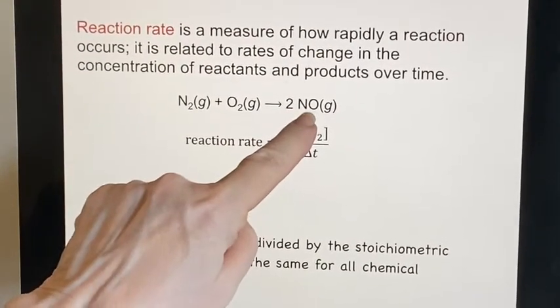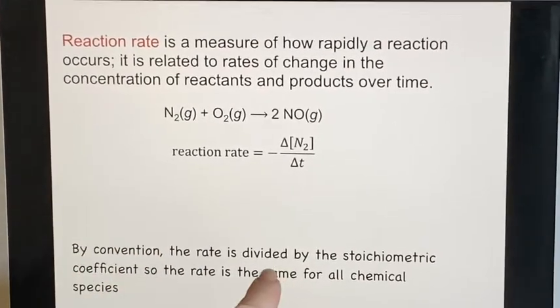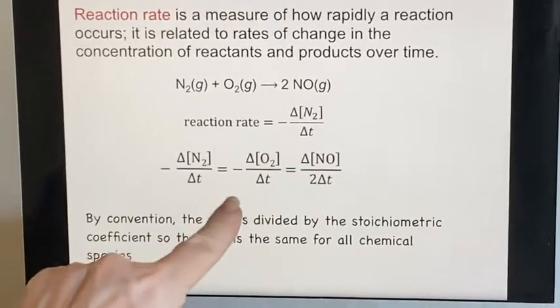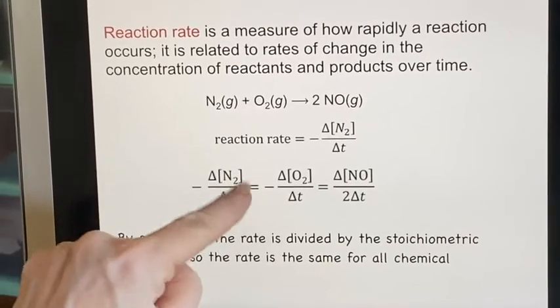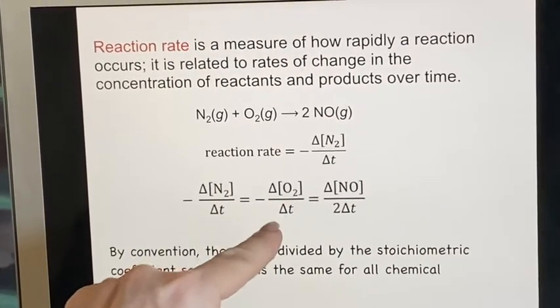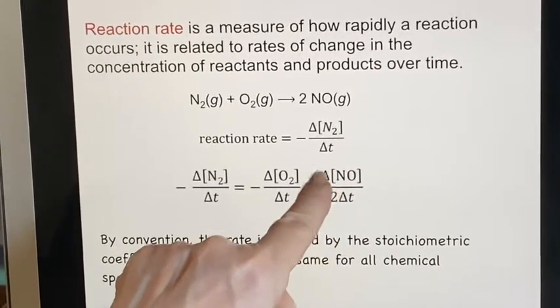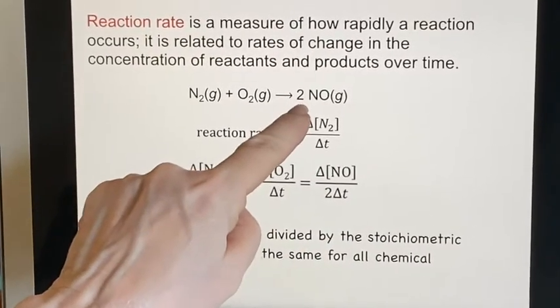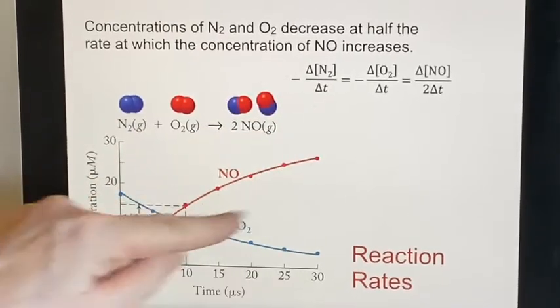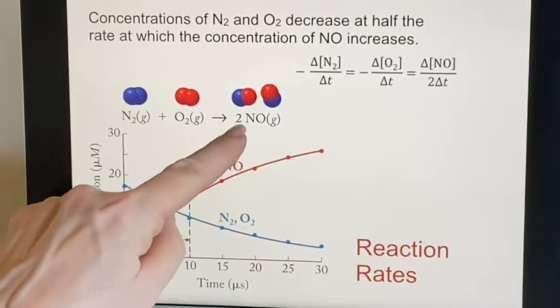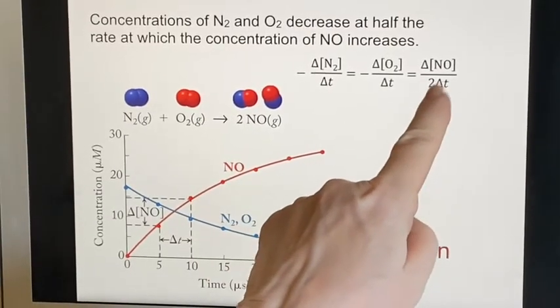So this rate has to be divided by the stoichiometric coefficient so the rate's the same for all the chemical species. If I was trying to do it in terms of this, this would always be twice as much. Then I would have to divide this by two. That's why it says divide by the stoichiometric coefficient. So we see that these three are all exactly the same number. This would normally be a negative number, but if I put a negative here it will now be a positive number. Same with this one. But this would happen twice as fast and so this would be double what this was. So I have to use the two down here to counteract it. So whatever that coefficient is, it ends up being in the denominator. These concentrations are decreasing at half the rate at which the concentration of NO increases. So these are half the rate of the NO.